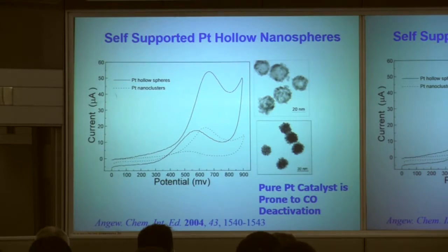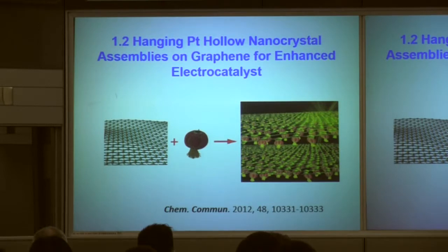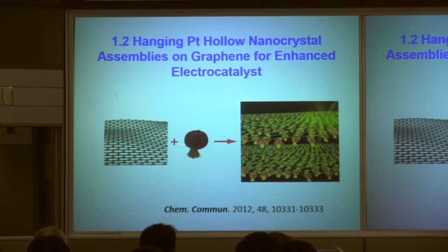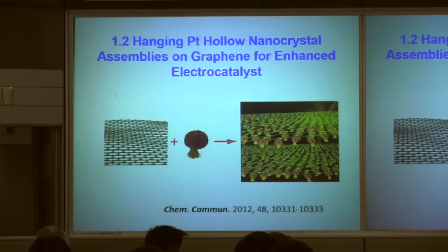This is a very simple method and I think the idea is very important. After we get this nanoparticle, I think we can put this nanosphere on a graphene surface. This is an illustration — just like a lot of nanospheres hanging on the graphene surface. In this case, maybe we can get a different and very high electrochemical property for this composite system.